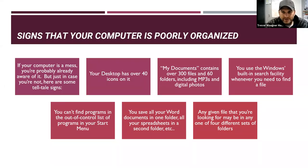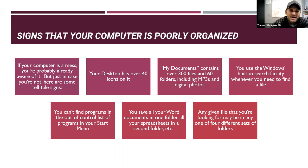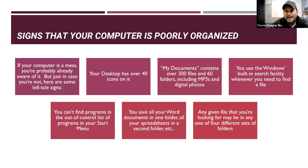These are some things to think about regarding your computer's organizational level. If your computer is a mess, you're probably already aware of it. Telltale signs: if your desktop has over 40 icons; if your My Documents folder contains over 300 files and 60 different folders including MP3s and digital photos; if you use the Windows built-in search every time you need to find a file instead of knowing where things are; or if you can't find programs in the Control Panel or Start menu.